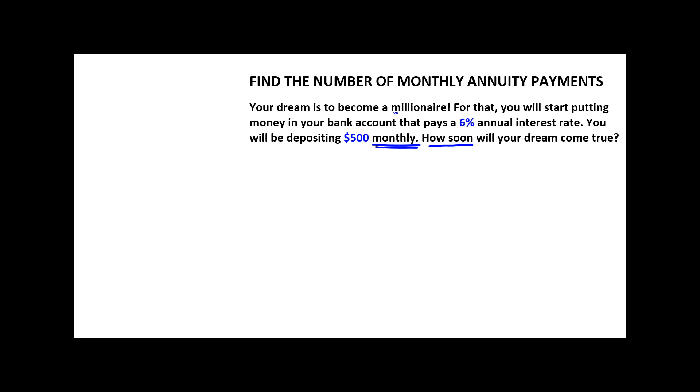What are we given here? We know that we want to become a millionaire. That's $1 million. We want to become a millionaire in the future, which means $1 million is our future value. So, our future value of our ordinary annuity is $1 million, right?